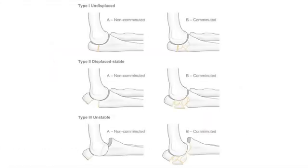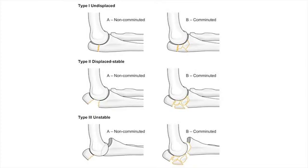Indications for a tension band wire procedure include simple isolated displaced fractures of the olecranon, type 2a according to the Mayo classification. Due to the potential for tension band wire failure, plate fixation should be considered in the following situations.